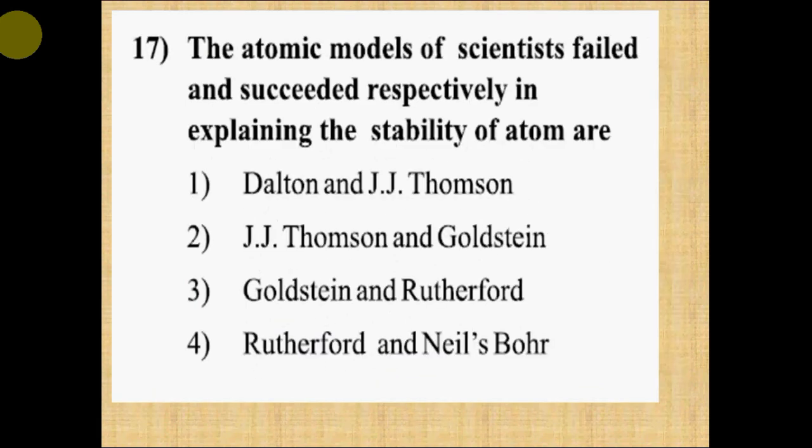Question number 17: The atomic models of scientists failed and succeeded respectively in explaining the stability of atom are: Option 1, Dalton and J.J. Thomson. Option 2, J.J. Thomson and Goldstein. Option 3, Goldstein and Rutherford. Option 4, Rutherford and Niels Bohr. Correct answer is option 4, Rutherford and Niels Bohr.